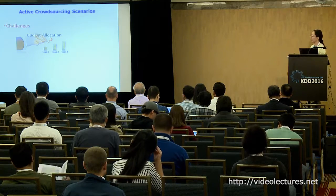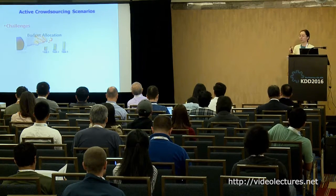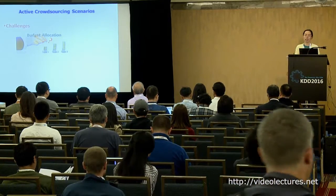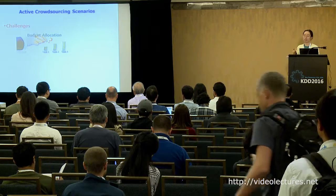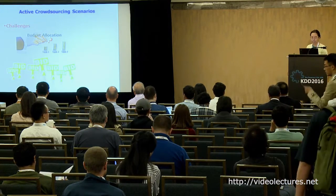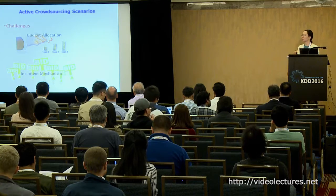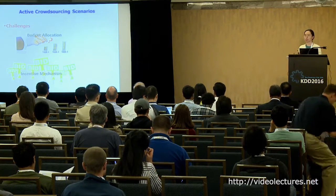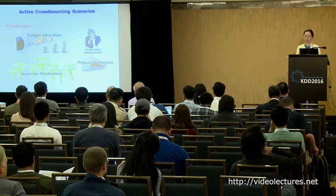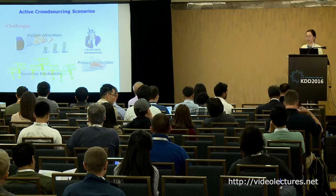The first topic is budget allocation, studied from the requester's perspective. As a requester, you may have a limited budget and need to pay the workers — how to allocate that budget to get the best result? The second is incentive mechanism, studied from both the requester's and workers' perspectives, aiming for a win-win strategy. The third topic is from the worker's perspective: how to protect worker privacy so they are willing to submit their data to the platforms.